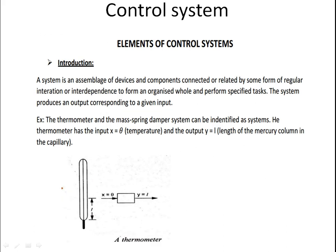Before discussing the elements of the control system, we need to see the introduction first — what is meant by a system, how to form a system, and how to design a system to control our requirements. A system is an assemblage of devices, components, and equipment that we connect and integrate together to perform a specific task.